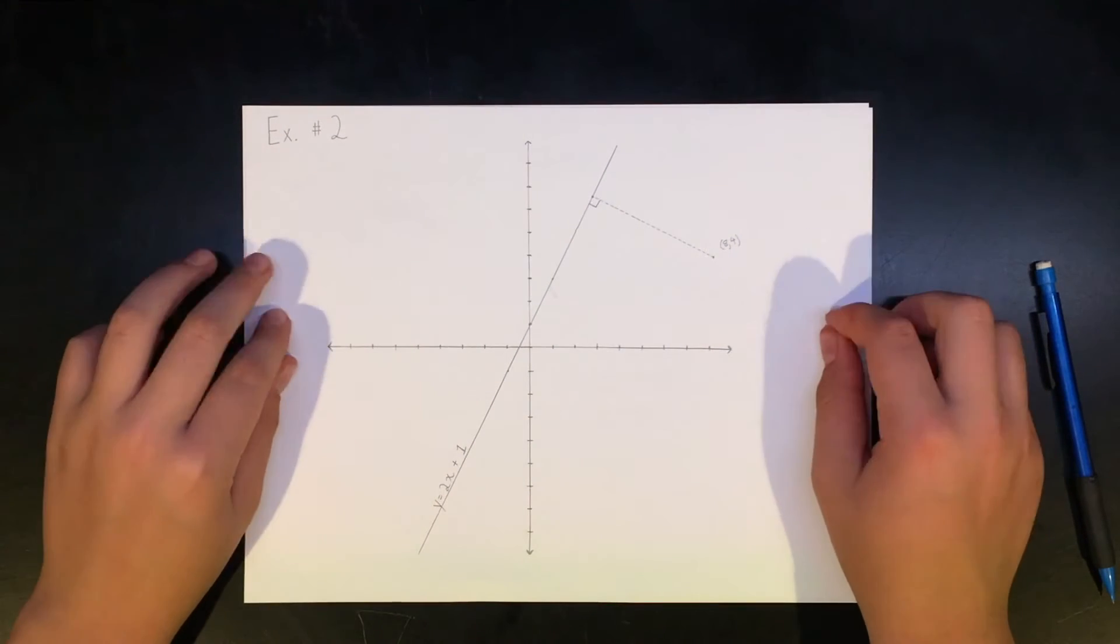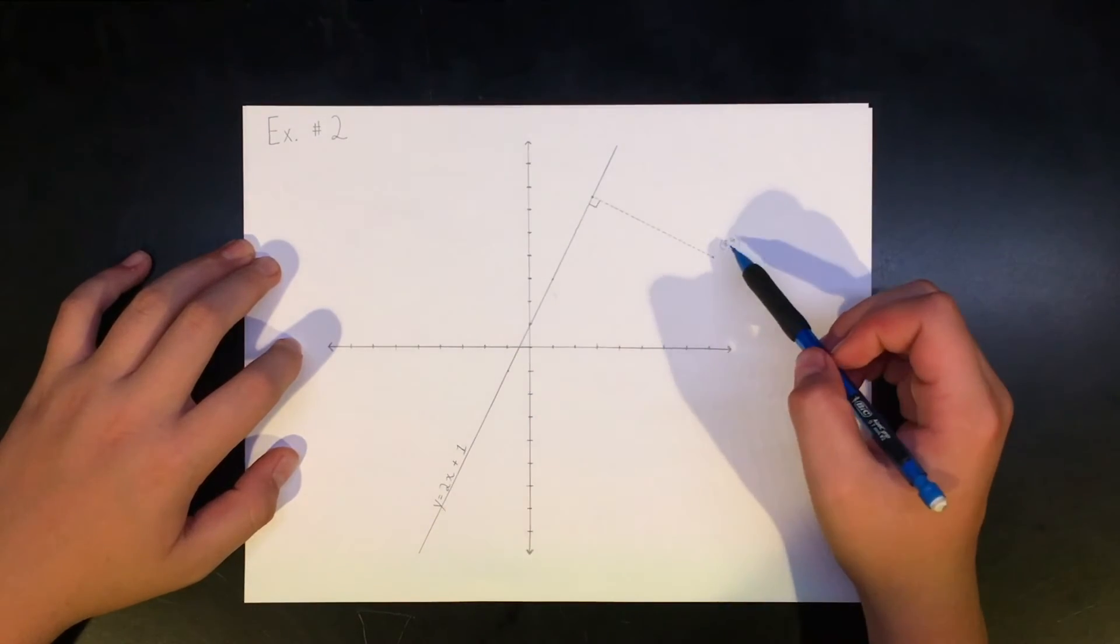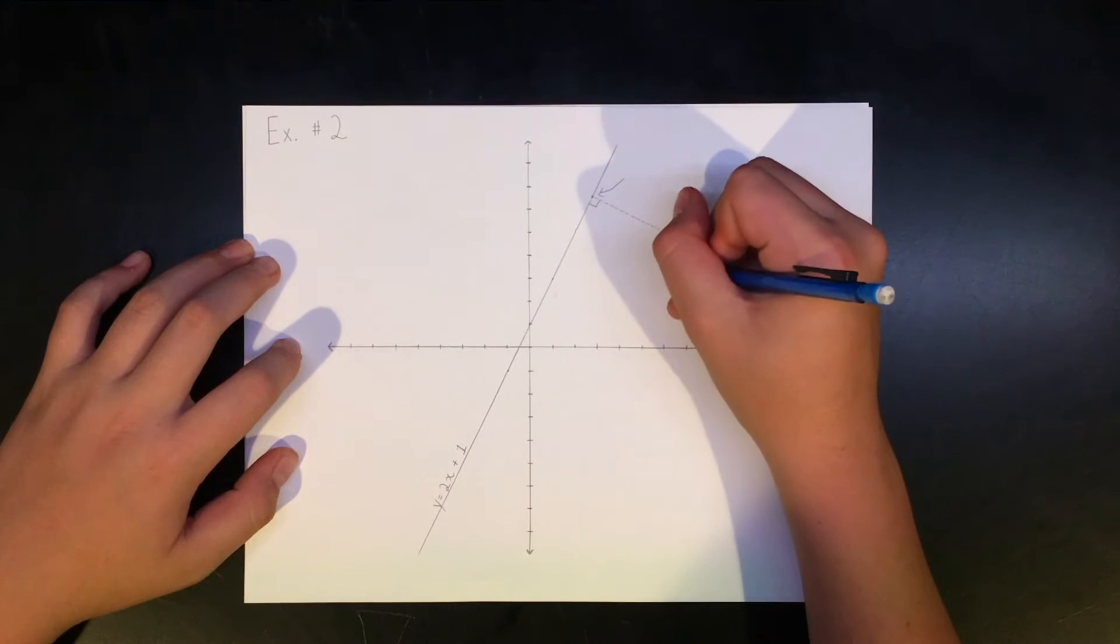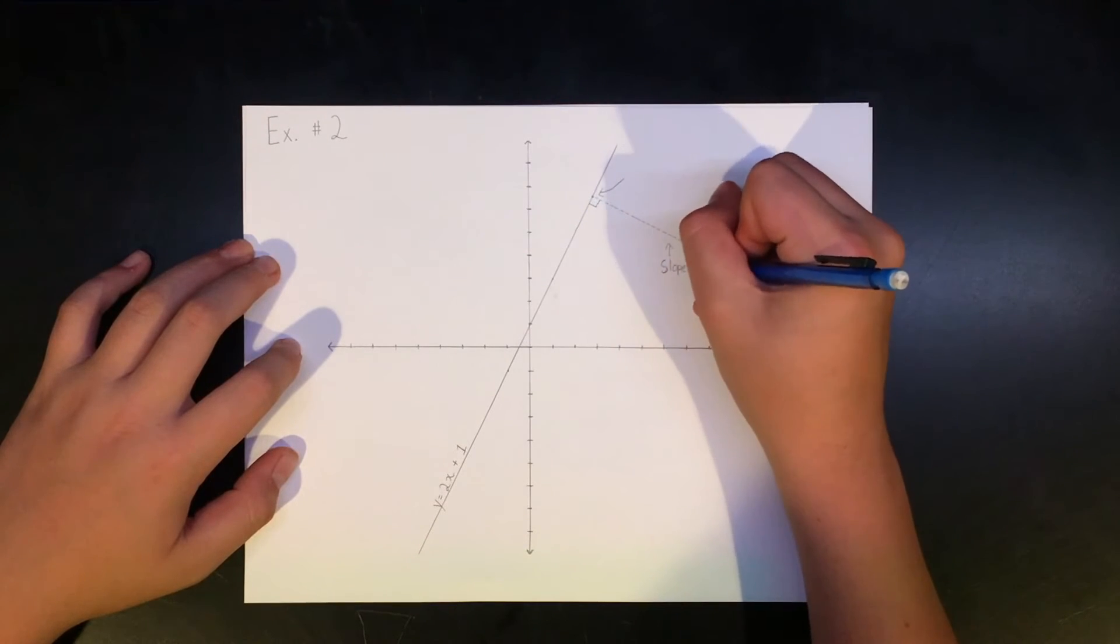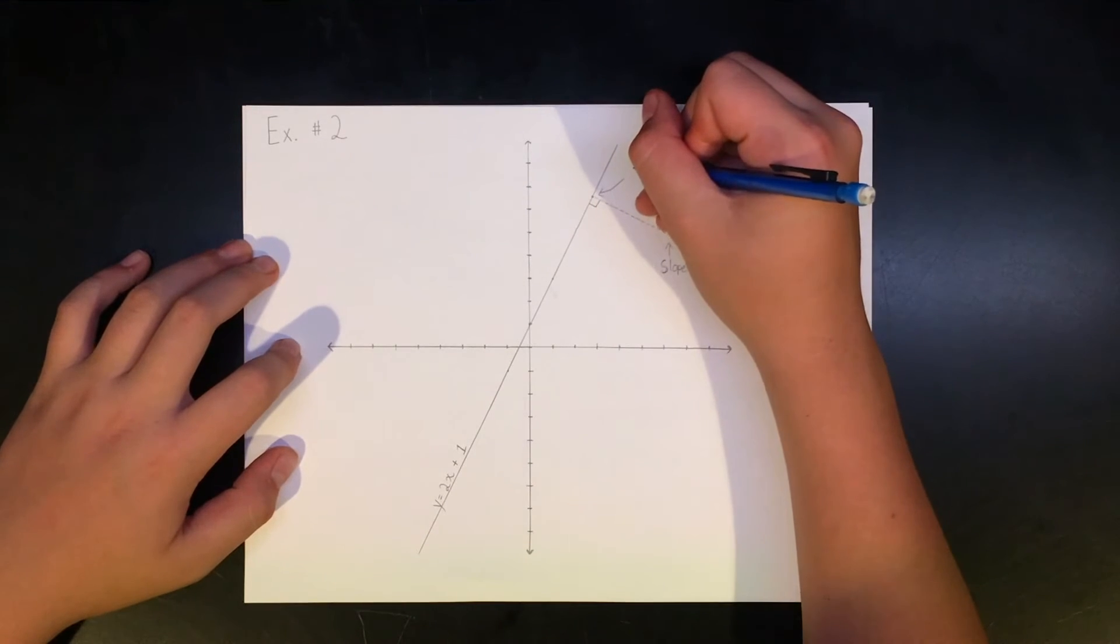Another more complicated example of the usage of distance formula is when you're given a line and a point. Let's say the point is 8, 4 and the equation of the line is y equals 2x plus 1. We would need to find the shortest distance between the point and the line. This is done by making the line perpendicular to the equation.